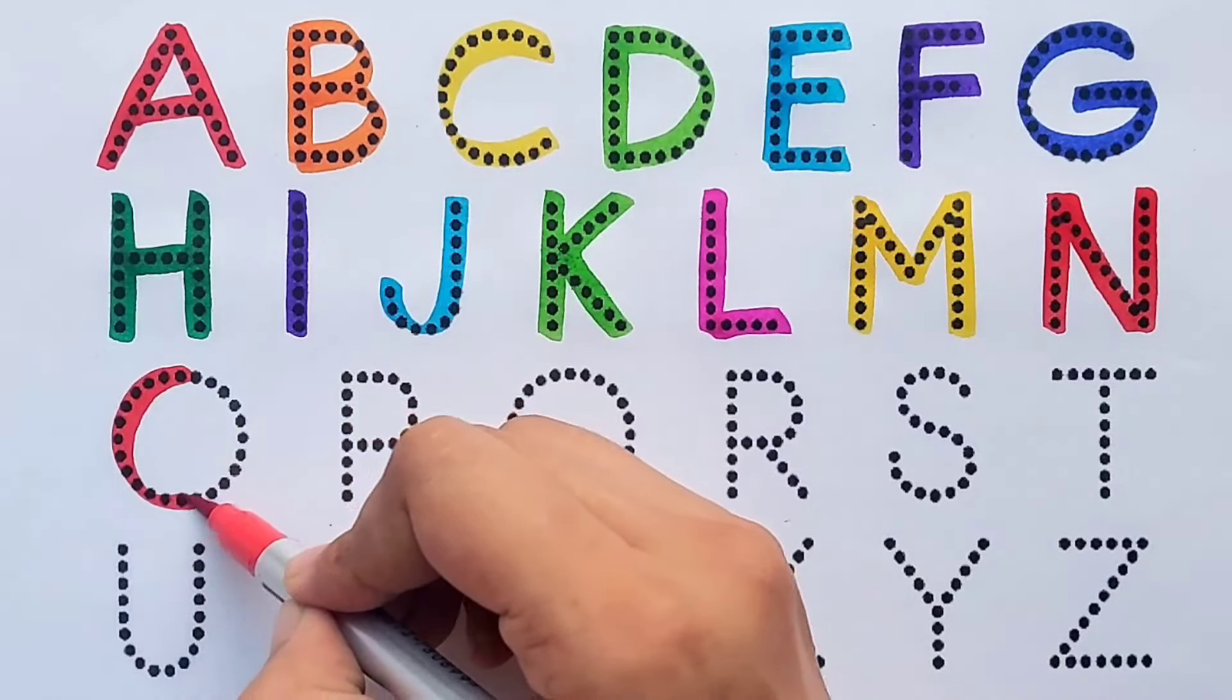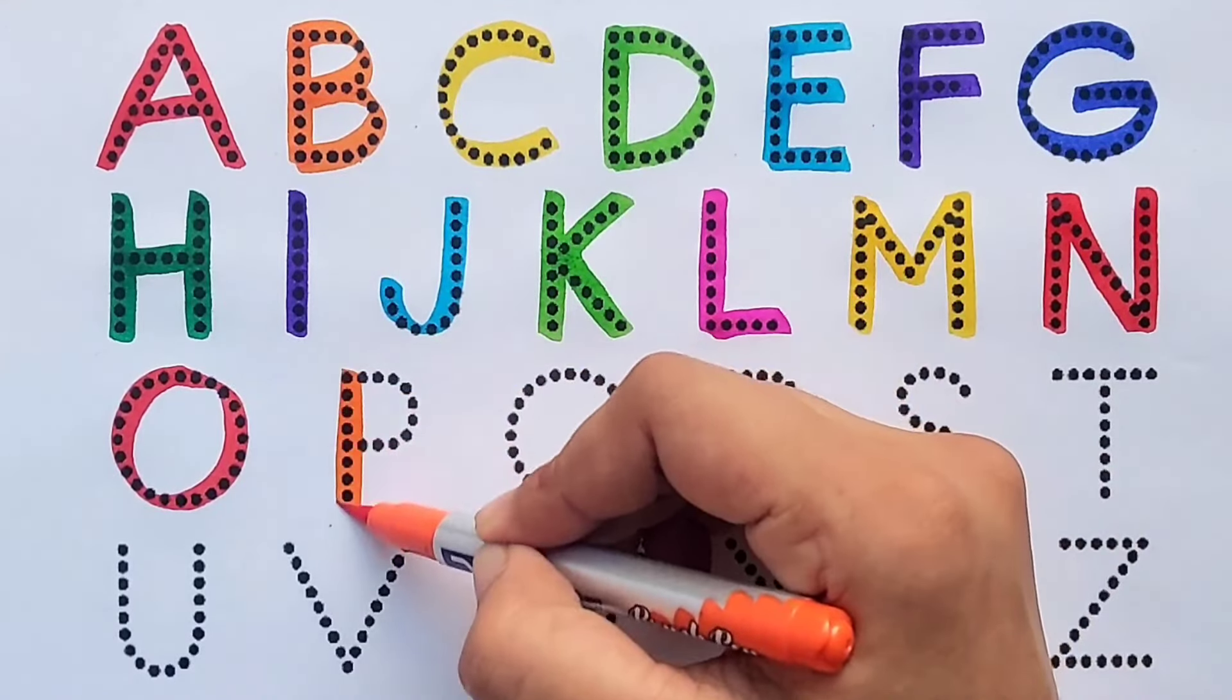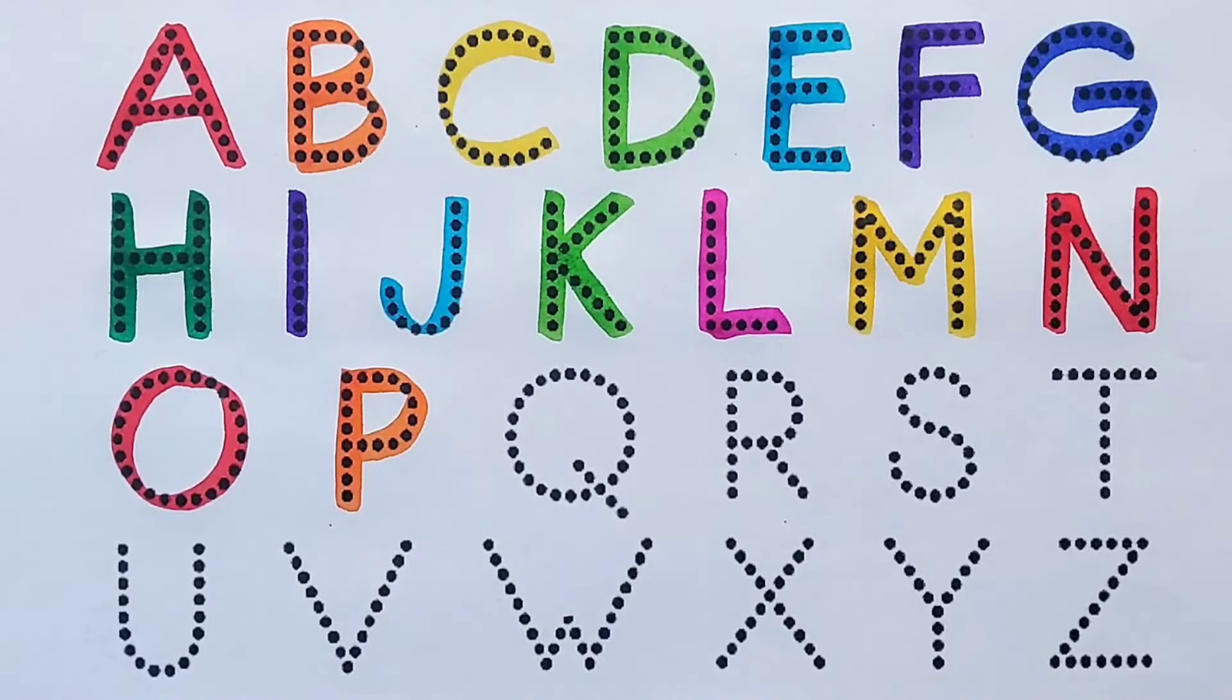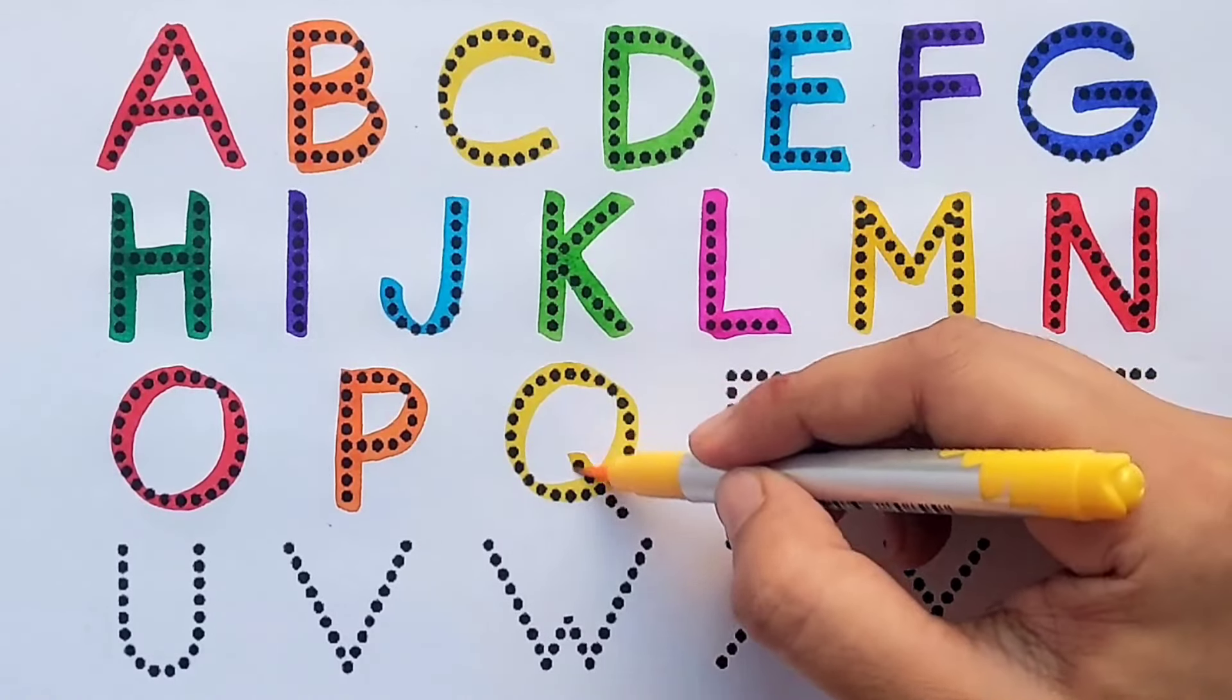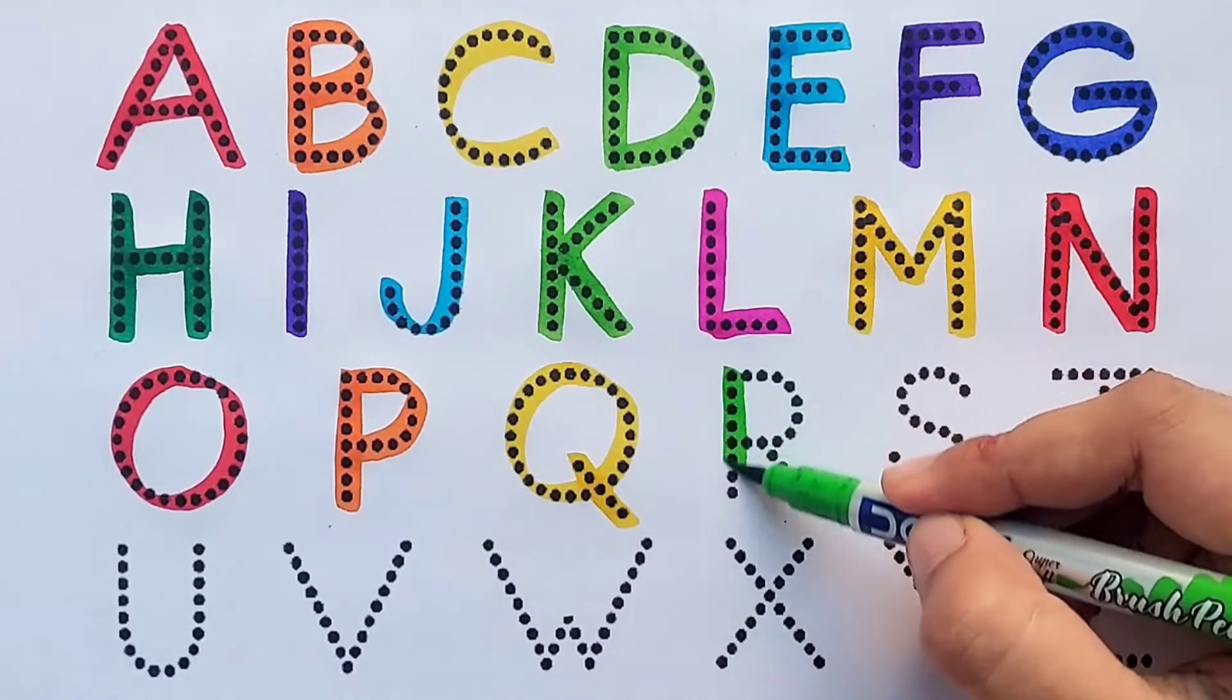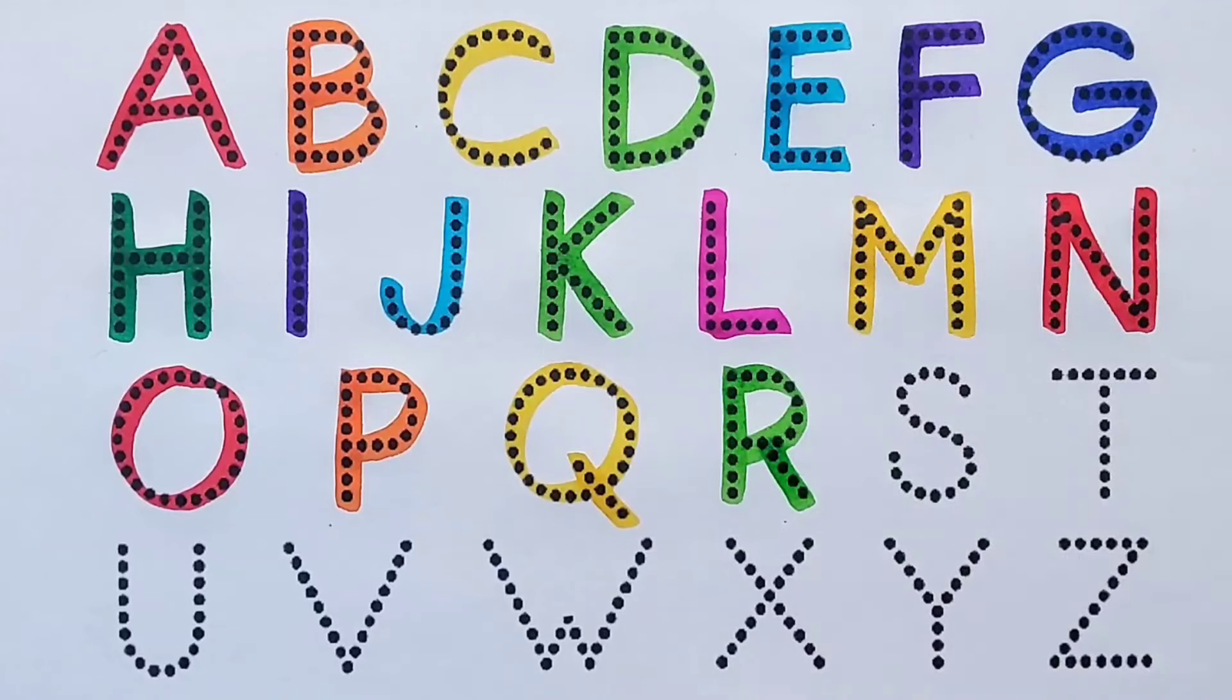Red color O, O for owl. Orange color P, P for pigeon. Yellow color Q, Q for quilt. Light green color R, R for rose.